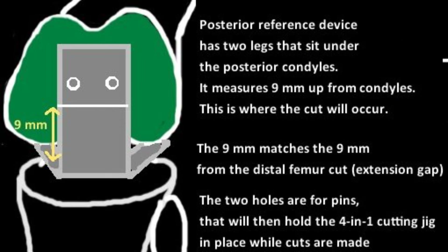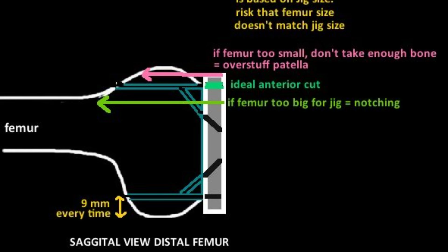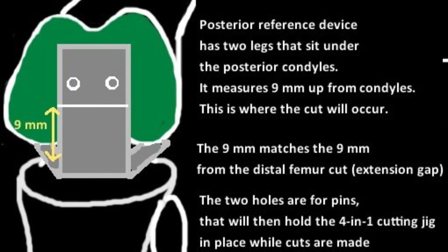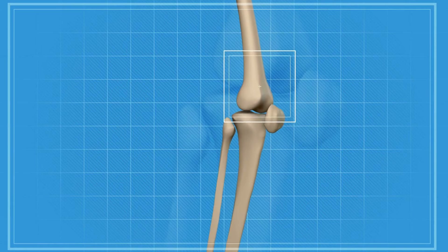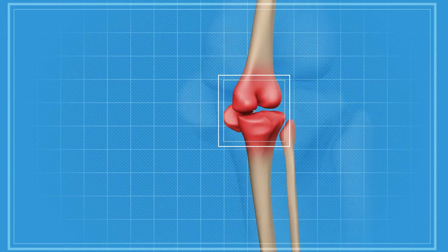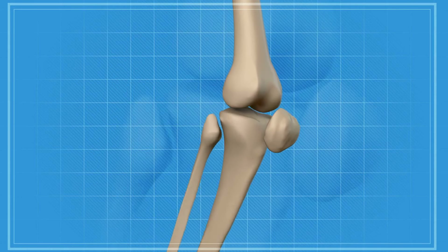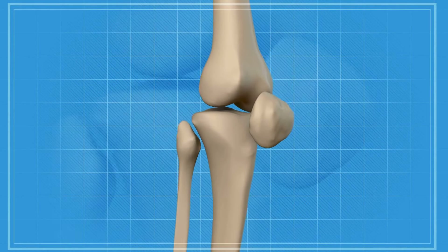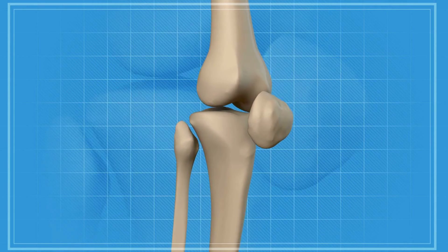The feet of the jig are set against the posterior femoral condyles; you mark the spot with two pins, then place the appropriately sized 4-in-1 cutting guide onto these pins and begin cutting. The benefit of this technique is that it recreates the normal posterior condyle offset, which is directly related to the arc of motion before impingement occurs. Restoration of offset allows a normal arc of motion, while reduced offset shifts the posterior femoral cortex closer to the posterior tibia, causing early impingement and decreased knee flexion.